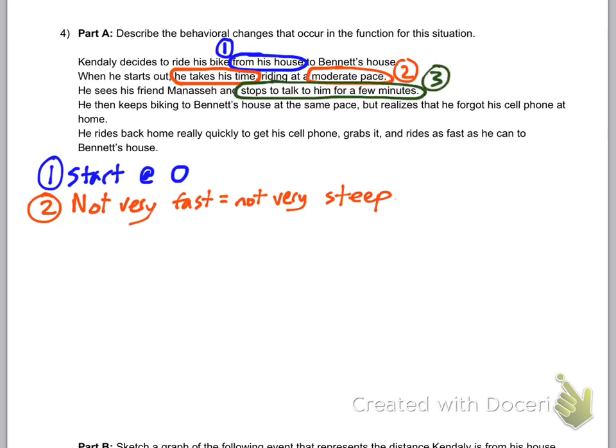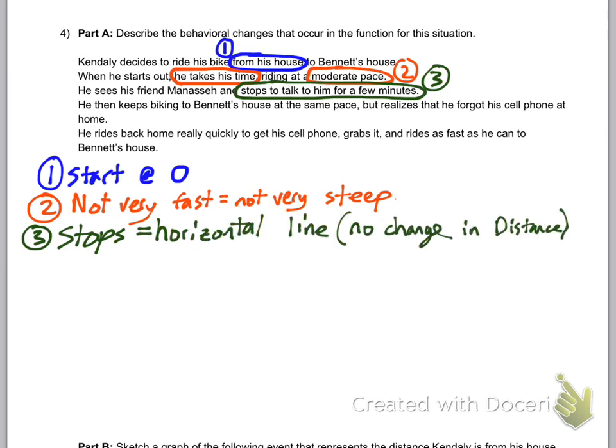He sees his friend, Manessa, and stops to talk to him for a few minutes. He stops. That means he's not moving anywhere, but time is still going on. So just like before, when the child stops at the top of the slide, those points and the line needs to keep going to the right, even though he's not going anywhere. There's no change in distance, but time keeps going on. That makes a horizontal line.